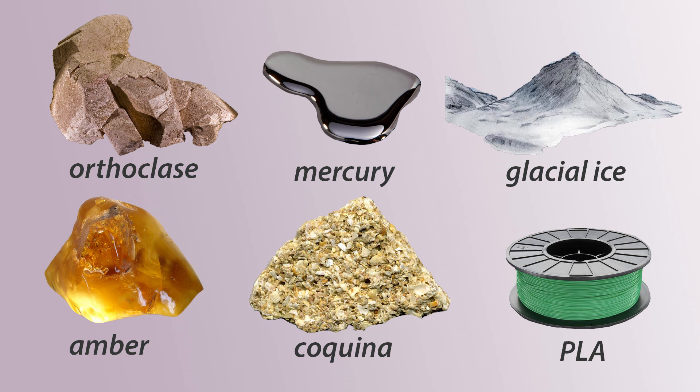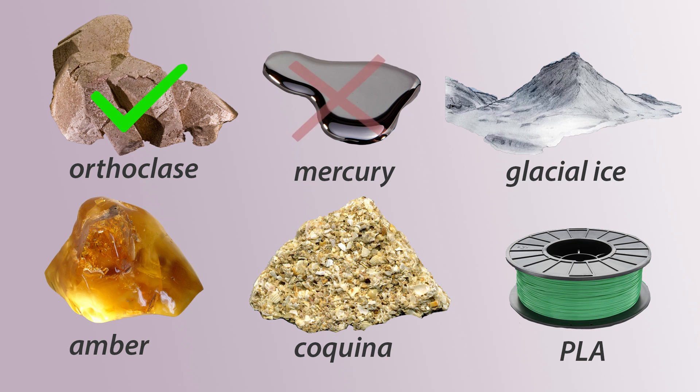Orthoclase feldspar is not made in a lab or from a living thing — it's actually formed in hydrothermal deposits. It's definitely solid, and it always has the same chemical formula. It has a monoclinic crystal system, so this one is definitely a mineral. What about mercury? Well, mercury isn't solid at room temperature, so it wouldn't be a mineral.